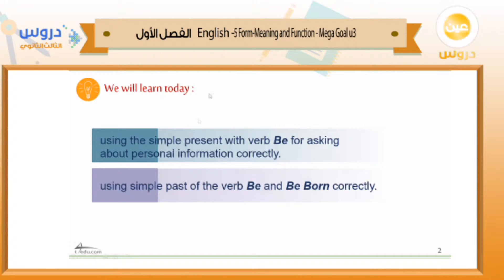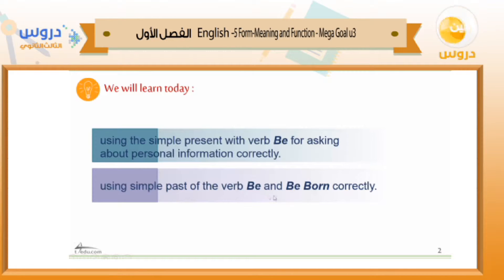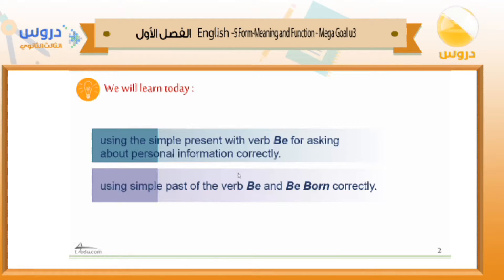We will learn today: using the simple present with verb be for asking about personal information correctly, and using simple past verb be and 'be born' correctly. All of these tenses — past simple and present simple — are used for personal information.